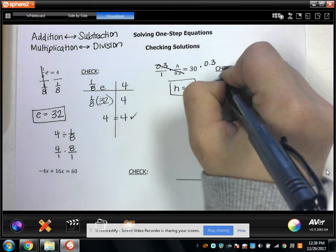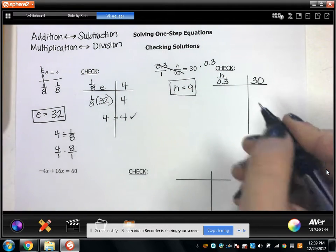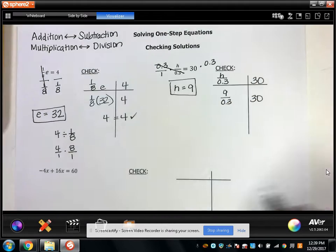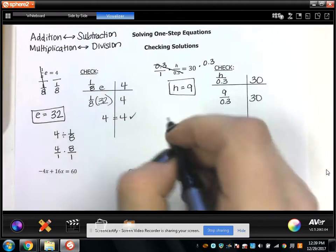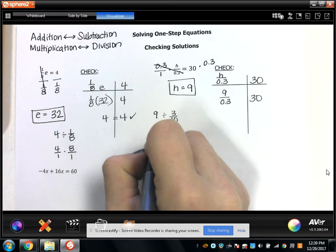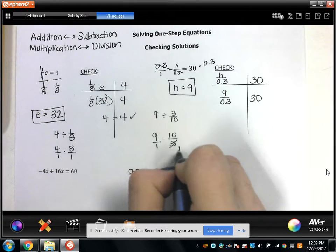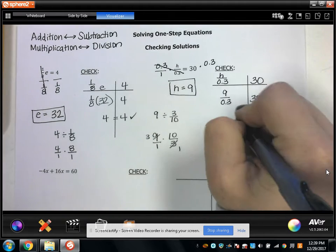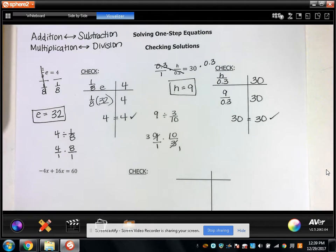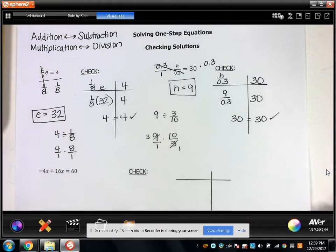Then for my check, I'm going to say H divided by 0.3 has to equal 30. Then I plug it in. 9 divided by 0.3 has to equal 30. Now let's say I didn't have a calculator. I could always say this is 9 divided by 3 tenths, which is the same thing as 9 times 10 over 3, which is 30. So I can write 30 equals 30, check. I know my answer is right because my equation is balanced. I get the same answer when I plug in H equals 9.